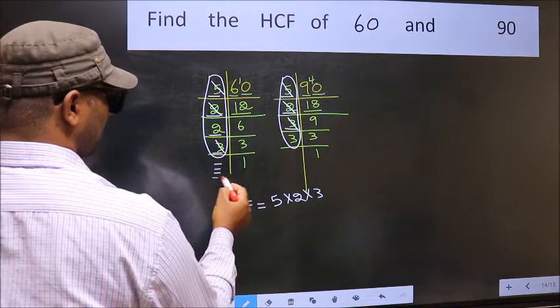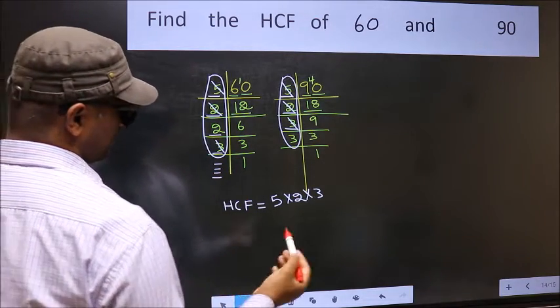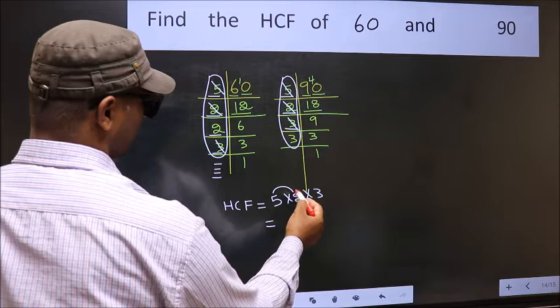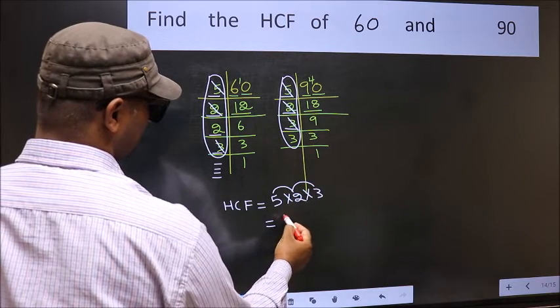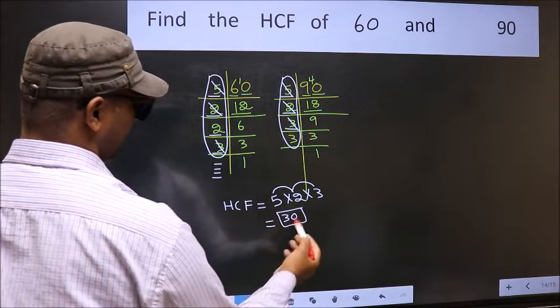No more numbers have been left out. So our HCF is 5 into 2, 10 into 3, 30 is our HCF.